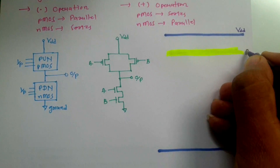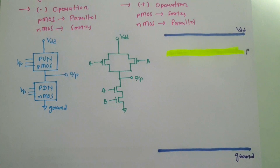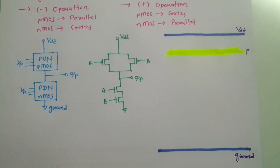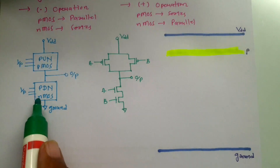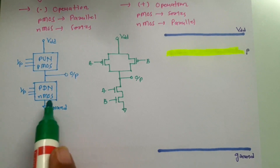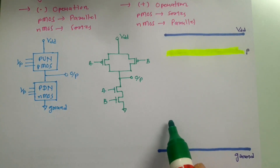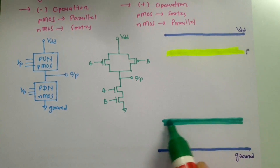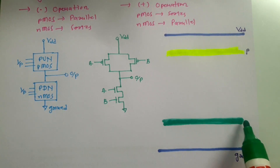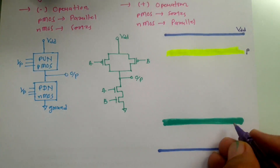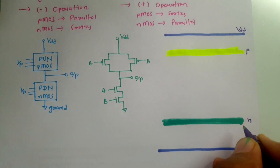This yellow region is my P-type material. The pull-down network is made up of NMOS, which uses N-type material. N-type material is represented by green color, so here I have N-type material shown in green.